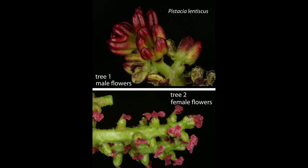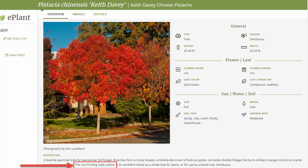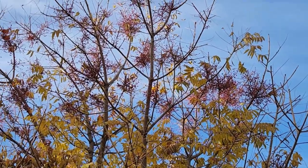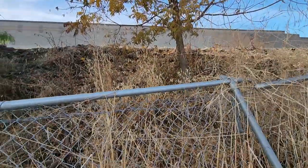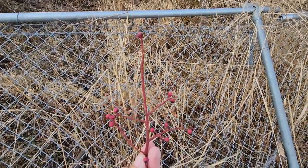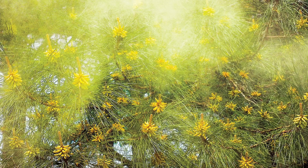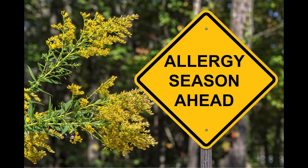An example is Chinese pistache. This is very popular in the California Bay Area, and Keith Davey is a very popular male cultivar. If you plant a Keith Davey pistache, you're guaranteed to never have fruit because it's a male cultivar. But if you plant just a Chinese pistache — not a cultivar — you might end up with clusters of fruits that some people find really messy.